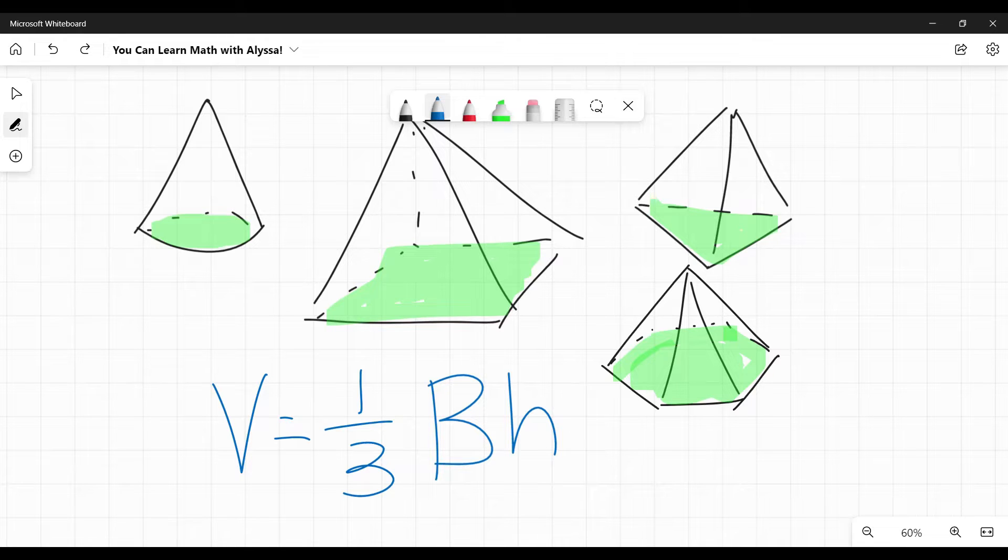So one-third area of the base times the height. And this is critical. When they say height, they do not mean this right there, this height. That is called the slant height, that exterior from the point down to the bottom edge. If they give you that, do not make the mistake of using that as your height. When they say height, they want to pretend that you made a hole at the top of this pyramid or cone, and you dropped a little string down all the way to the bottom. They said, how tall, how long is that string? That's what the height is. It's going to form a right angle at the bottom. That's the height.